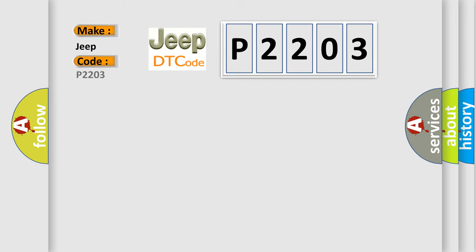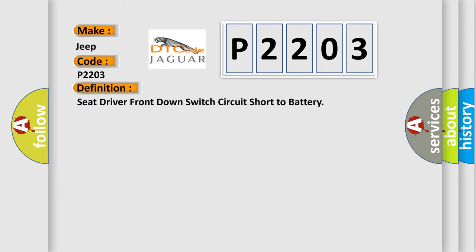P2203 specifically for Jeep car manufacturers. The basic definition is: Seat driver front down switch circuit short to battery. And now this is a short description of this DTC code.